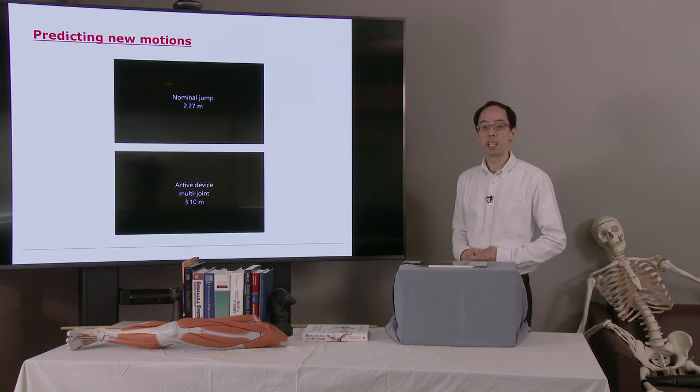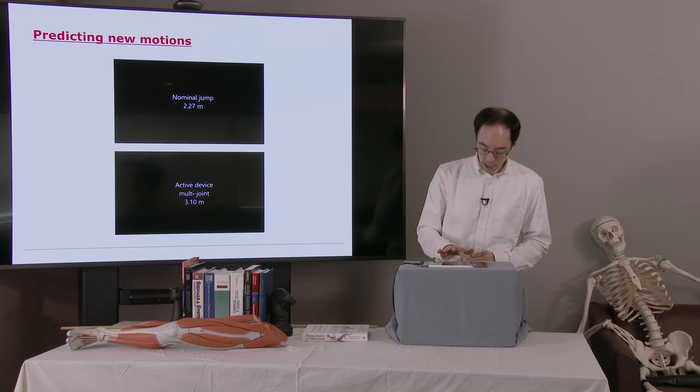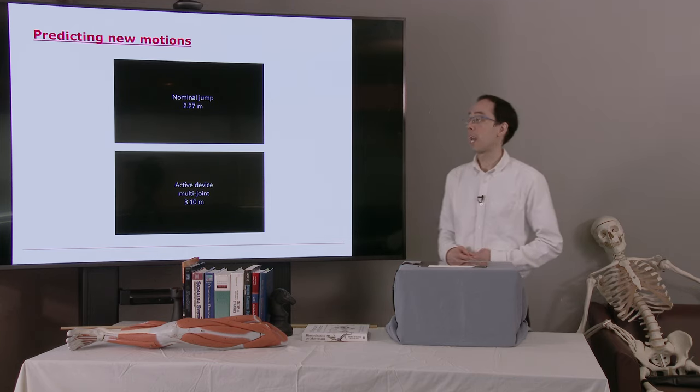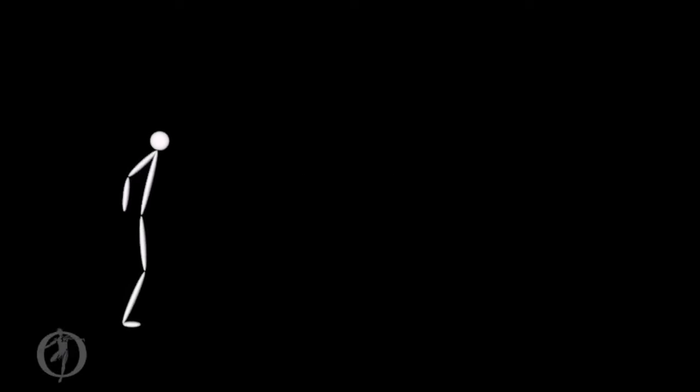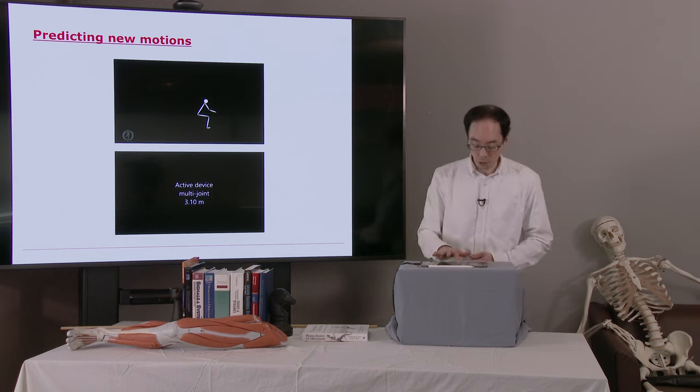One interesting thing that he used as validation for his model was that the optimizer predicted a counter movement. If you think about trying to jump far, what are you going to do? Very similar to throwing a baseball really far or trying to jump really high. There will be some windup. We call that a counter movement.